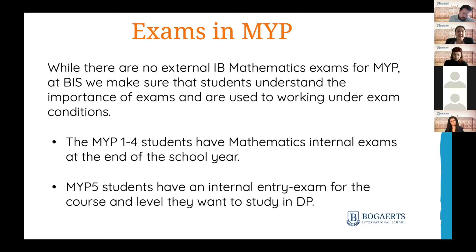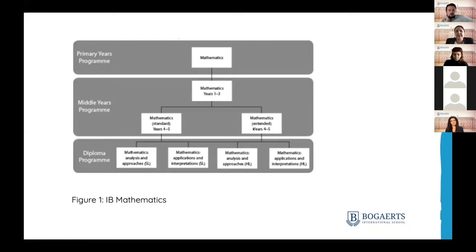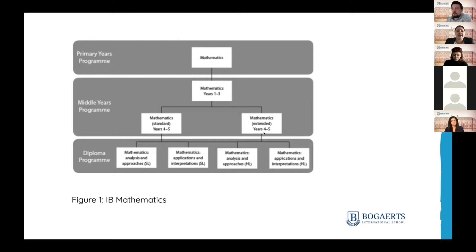MYP 1 to 4 students have mathematics internal exams at the end of each school year, and MYP5 students will have an internal entry exam for the DP course and level they want to study. The progression goes from PYP through MYP 1 to 3 with the same curriculum, then in MYP 4 and 5 it divides into standard and extended. MYP standard is the best preparation for DP standard level, and the extended group is prepared for higher level DP exams. A student following MYP extended could also do standard level exams, and vice versa with additional work.